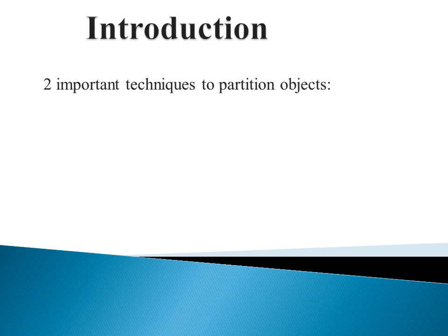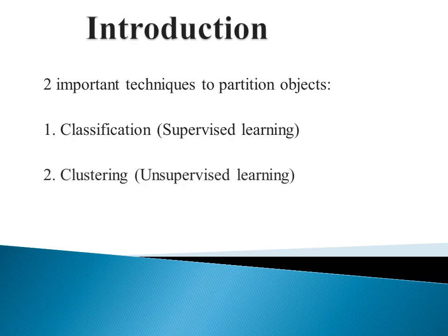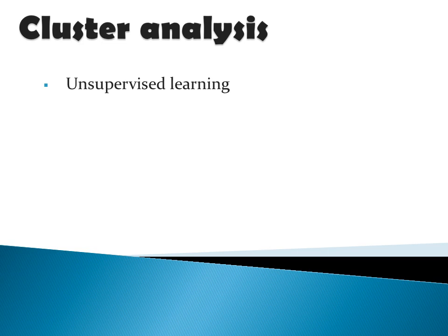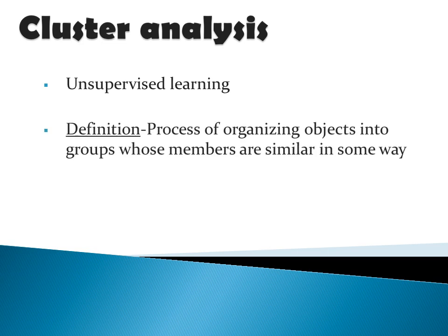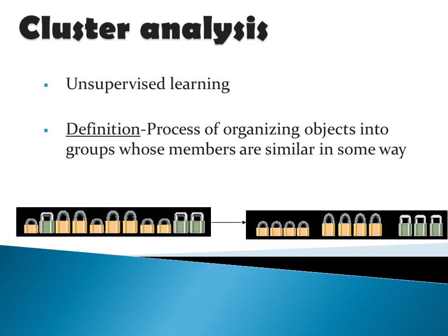Introduction. There are two important techniques to partition objects. The first one is classification or supervised learning technique. The second one is clustering or unsupervised learning technique. We have studied in modules 3 and 4 about classification and discussed the ID3 algorithm. Now we will be moving to clustering — it is nothing but grouping similar data points into single groups. It is an unsupervised learning technique, the process of organizing objects into groups whose members are similar in some way. Consider the figure.